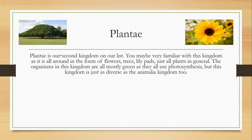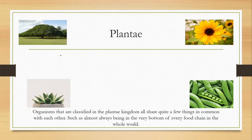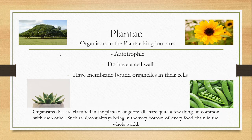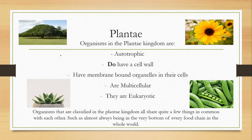Plantae is our second kingdom. You may be very familiar with this kingdom as it is all around in the form of flowers, trees, lily pads, and just all plants in general. The organisms in this kingdom are mostly green as they all use photosynthesis, but this kingdom is just as diverse as the Animalia kingdom. Organisms in the Plantae kingdom are autotrophic, meaning they use photosynthesis and energy from the Sun. They do have a cell wall, they have membrane-bound organelles, they are multicellular, and they are eukaryotic.